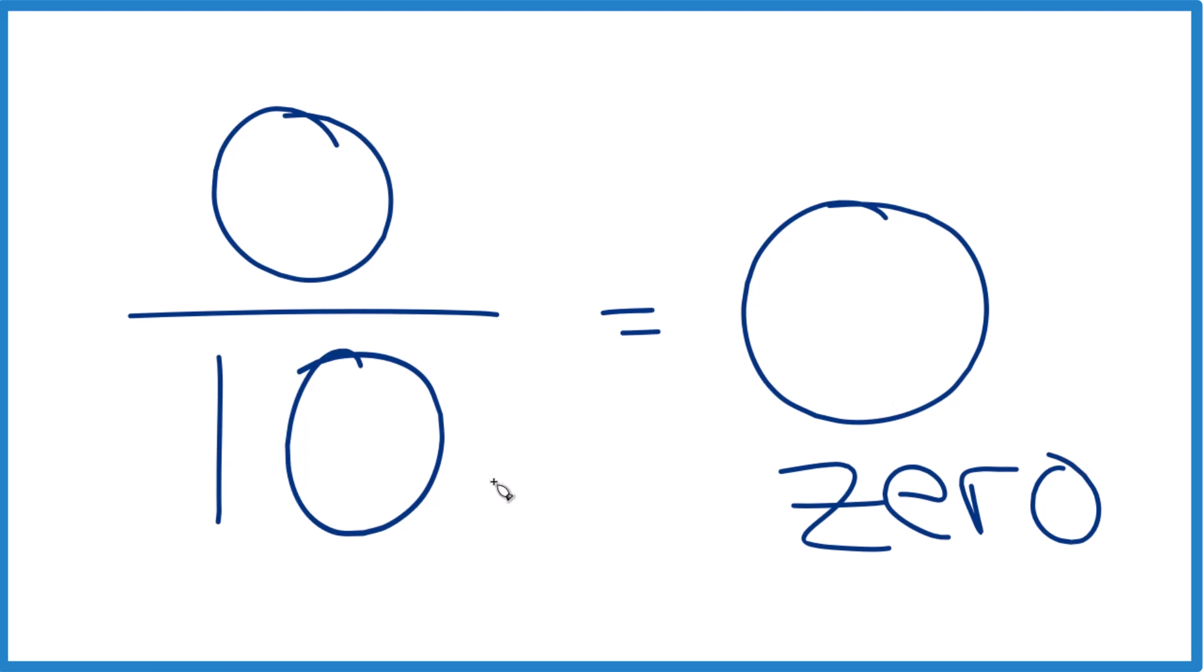0 divided by 10, that's 0. In fact, 0 divided by any number equals 0, with one notable exception. 0 divided by 0 is undefined. This is Dr. B. Thanks for watching.